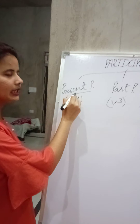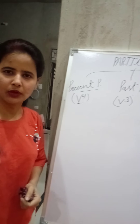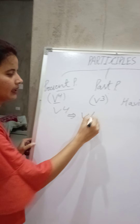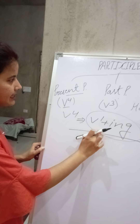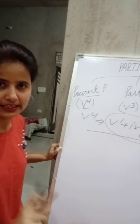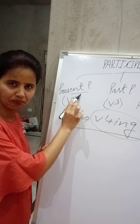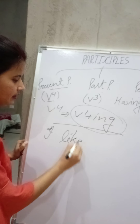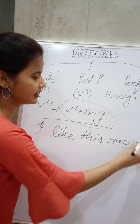So what is present participle? Present participle is represented by V4, which means V1 plus ING. If you find this ING form and it functions as an adjective in a sentence, then this form will be called present participle. For example: I like this racing car.